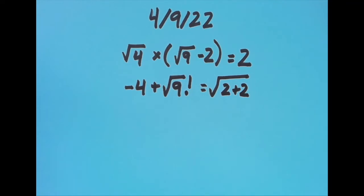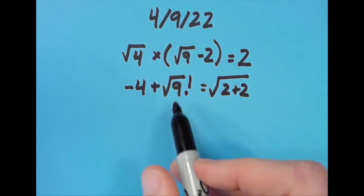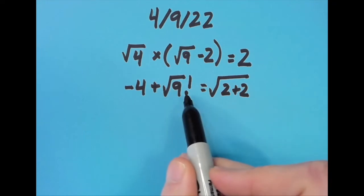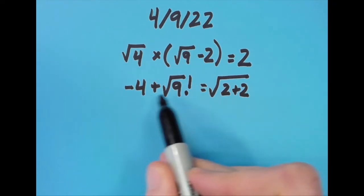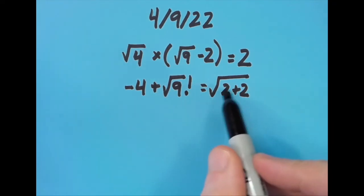So you can read that if you like, but √9 is 3, 3 factorial is 6, and -4 + 6 is 2. On this side we have √4, which is also 2.